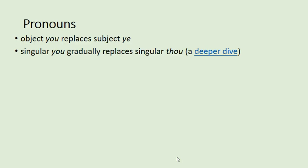We also get a replacement of 'thou,' the singular familiar form, with a singular 'you.' This is going on throughout the course of the early modern period. In more formal contexts the language changes slower, but in everyday speech by the early 1600s, 'thou' would have been a little bit old-fashioned.